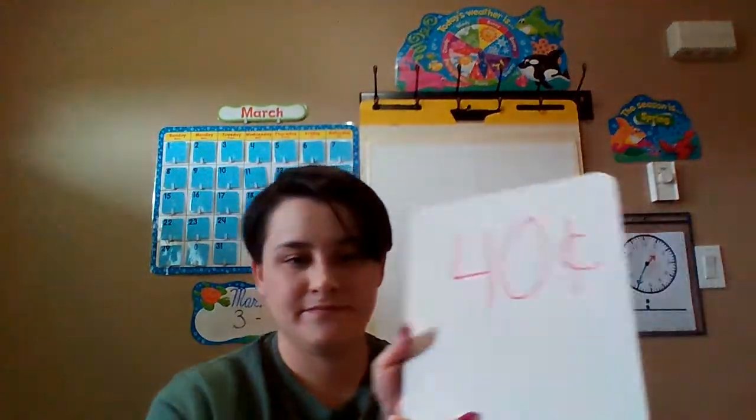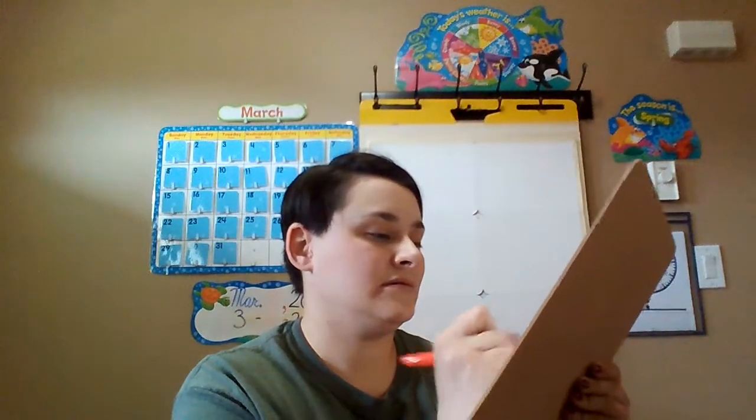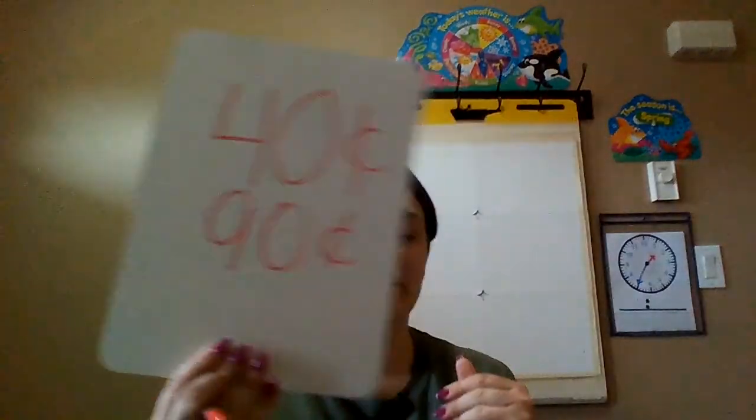So 40 cents — let's use some nickels to count 40 cents. Nickel, nickel, thick and fat, you're worth five, I know that. Five, ten, fifteen, twenty, twenty-five, thirty, thirty-five, forty. 40 cents. And the candy costs 90 cents.